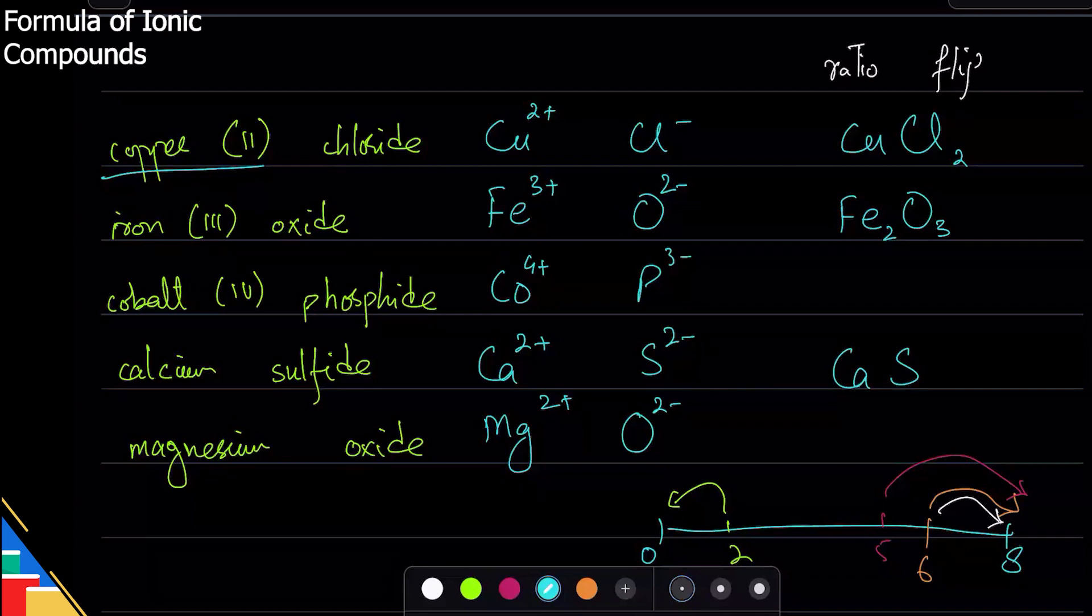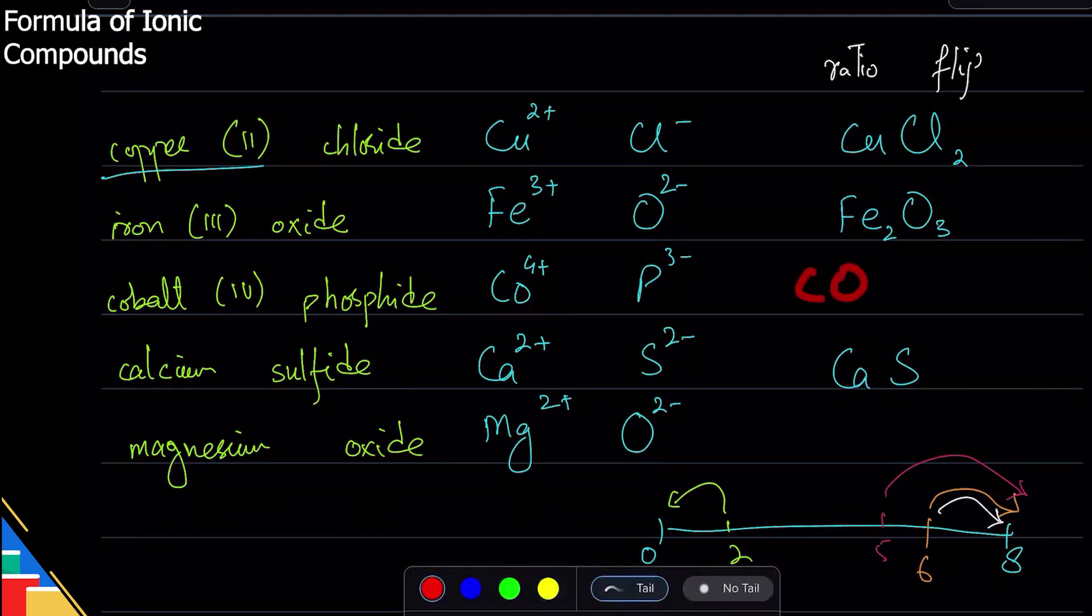You complete the other two, so send me a picture of what you write. Now one mistake with this is that when writing cobalt, sometimes students write CO like this. Remember, that is wrong because capital O is oxygen. If you're writing cobalt, it should be small o with Co. This CO means there is carbon and oxygen, which is very different from cobalt.